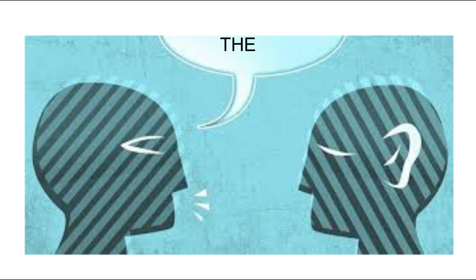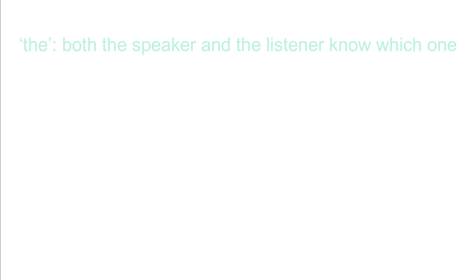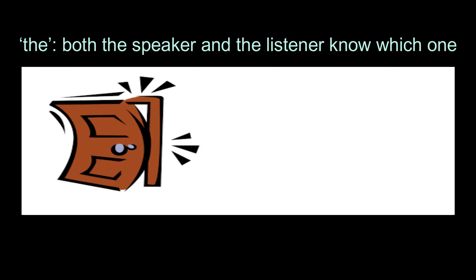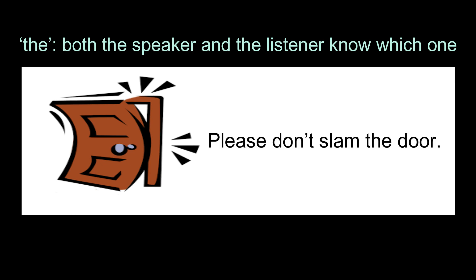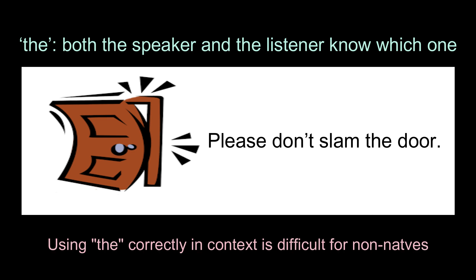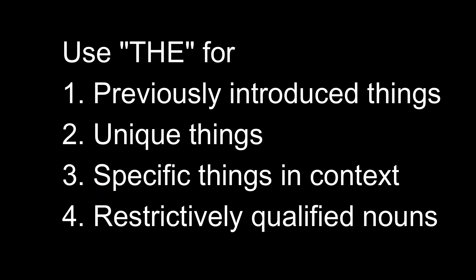To the native speaker, 'the' implies that both the speaker and the listener know which one. So we should use 'the' when we are talking about something that we think the listener knows. This can happen when the thing was introduced earlier. However, 'the' can be used even if the thing is introduced for the first time if context clearly indicates which thing the speaker is talking about. For example, 'Please don't slam the door.' The is used even though 'door' was never mentioned before, because it is viewed as obvious which door the speaker is talking about. That is, 'the' is used when the speaker assumes the listener knows which thing is being discussed. In this episode, we learn the cases that necessitate the use of 'the'.